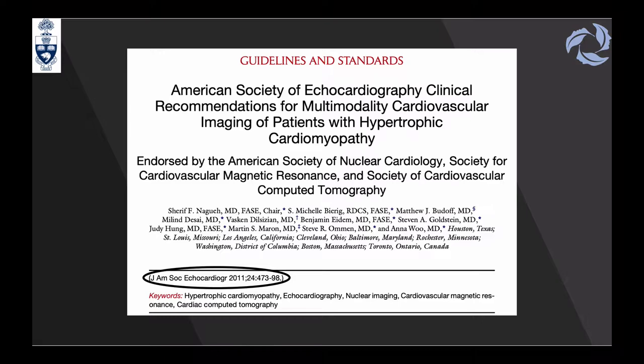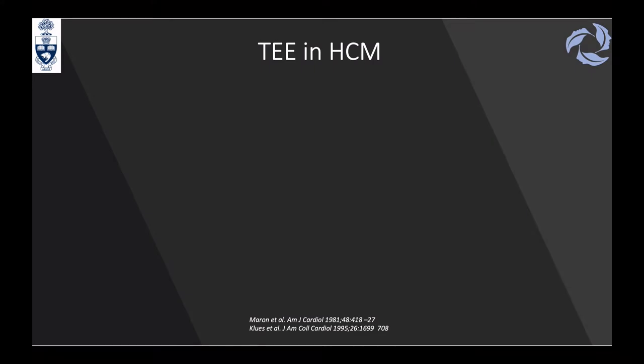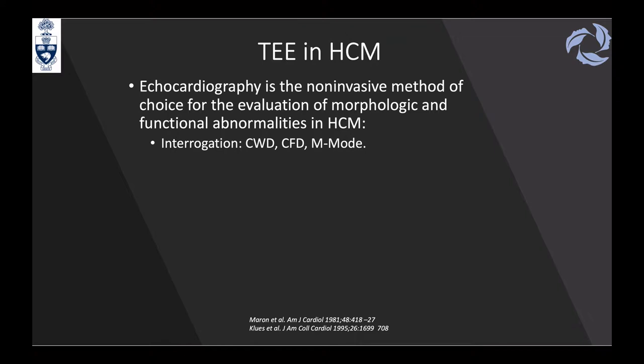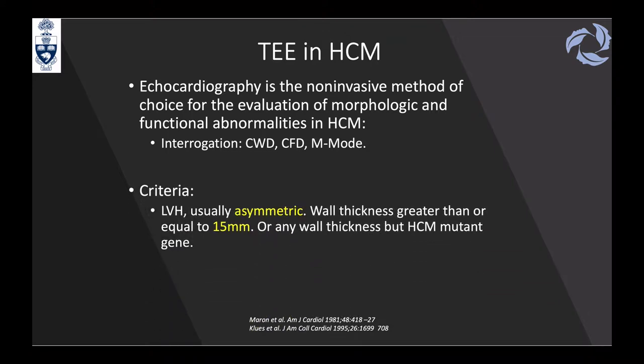From the American Society of Echo guidelines published in 2011, echocardiography is the non-invasive method of choice for evaluating functional abnormalities in HOCM. Doppler, color Doppler, and M-mode are used. The criteria for defining HCM include left ventricular hypertrophy, usually asymmetric, requiring a wall thickness greater than 15 millimeters, or any wall thickening with a positive gene mutation for HCM.